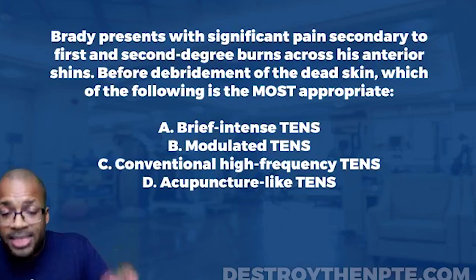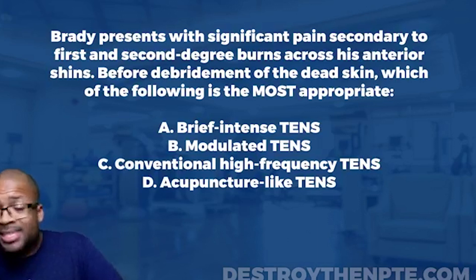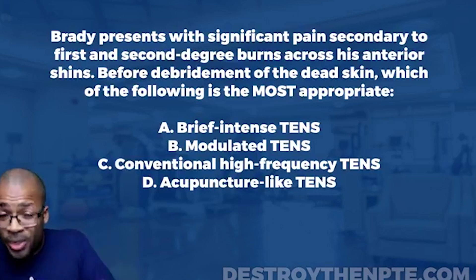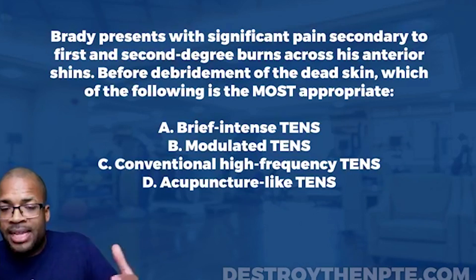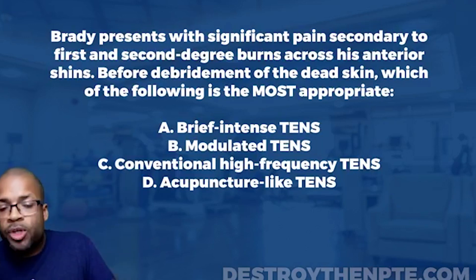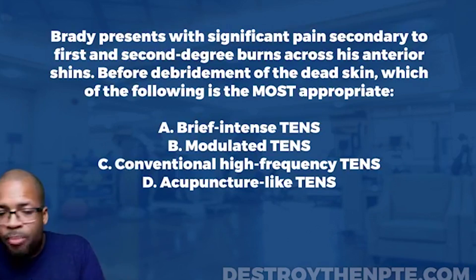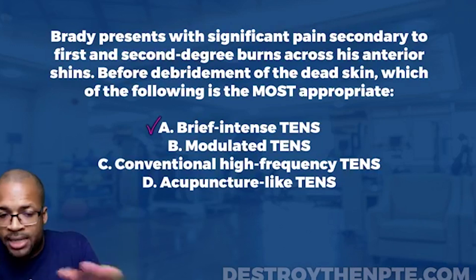Write this down — brief intense TENS is used for procedural pain. It is a high frequency, high intensity form of TENS where we're actually trying to create pain — a different type of pain — so the patient doesn't feel the intense pain of things like debriding dead skin. We're creating pain, but not that really aggravating, torturous pain of debriding dead tissue. I like brief intense TENS here — it fits. Let's look at B.